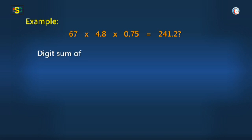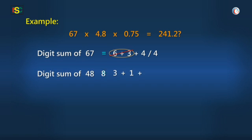So, digit sum of 67 is 6 plus 3 plus 4, or simply 4. Then, digit sum of 48 is 3 plus 1 plus 8, that is 3. And then, 75's digit sum is 7 plus 2 plus 3, which is also 3.